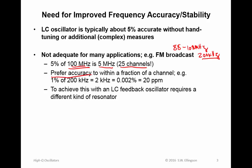What we'd prefer instead is accuracy to within some fraction of a channel — some fraction of 200 kilohertz. For example, if we select 1% of 200 kilohertz as the accuracy requirement, that's 2 kilohertz. And that's an accuracy of 0.002%, or as frequency synthesis people like to refer to it, 20 parts per million (PPM). To achieve this with an LC feedback oscillator requires a different kind of resonator.